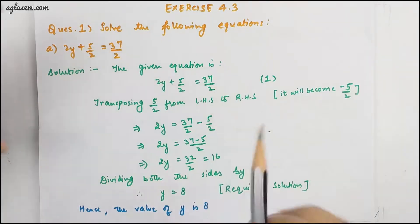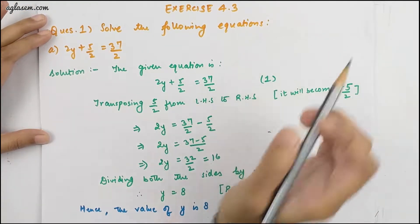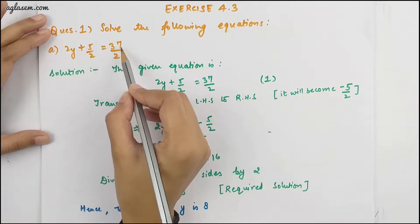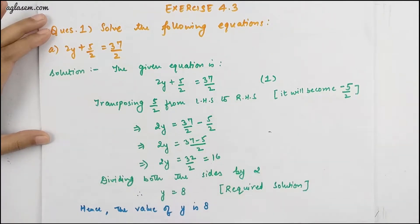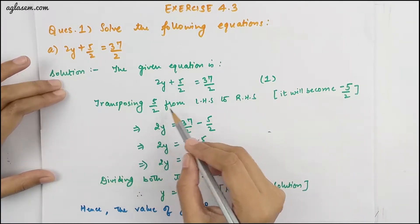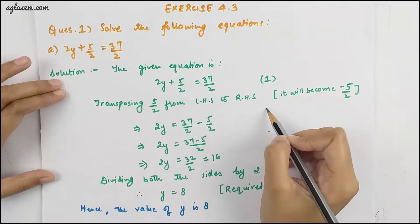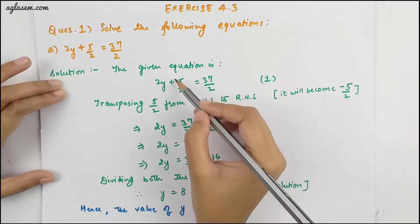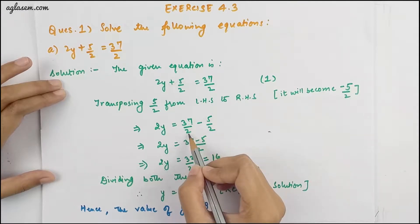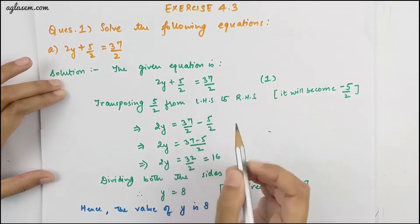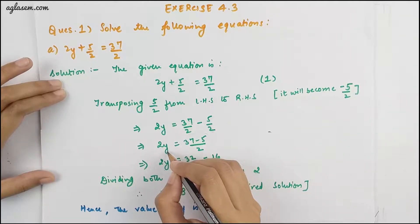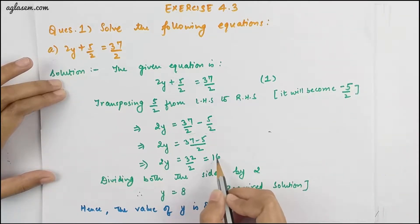Our first question is: solve the following equations. The first part is 2y + 5/2 = 37/2. Transposing 5/2 from LHS to RHS, the sign changes from plus to minus. So 2y = 37/2 − 5/2. Taking the LCM, we solve to get 2y = 16.